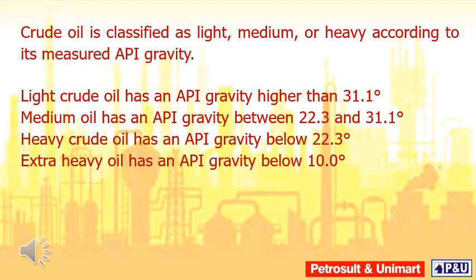Light crude oil has an API gravity higher than 31.1 degrees. Medium oil has an API gravity between 22.3 and 31.1 degrees. Heavy crude oil has an API gravity below 22.3 degrees.